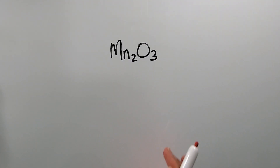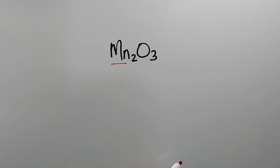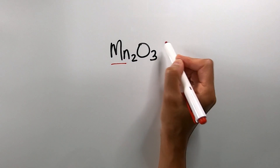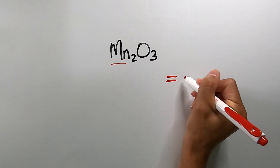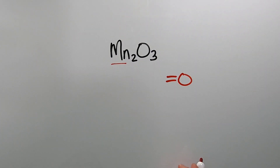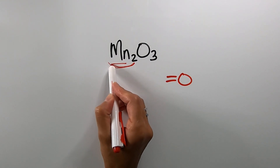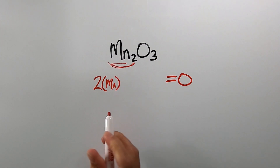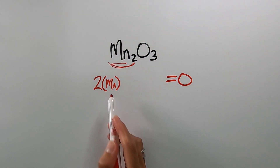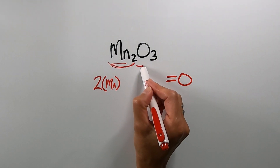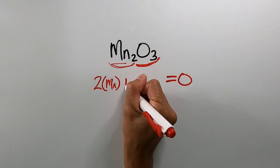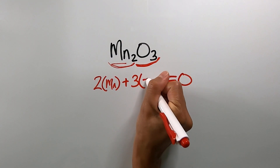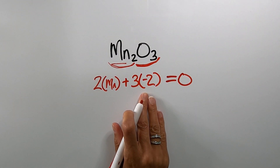So how about manganese oxide? Suppose we're trying to solve for the oxidation number of one manganese atom in this compound. First of all, notice there is no overall molecular charge, so we're going to start our equation with equal zero. We have two manganese atoms, so I'm going to do 2 times Mn — using its chemical symbol as the variable since that's what we're solving for. Then notice we have three oxygens, so I'll do plus 3 times negative 2, which is the oxidation number of oxygen from the periodic table.